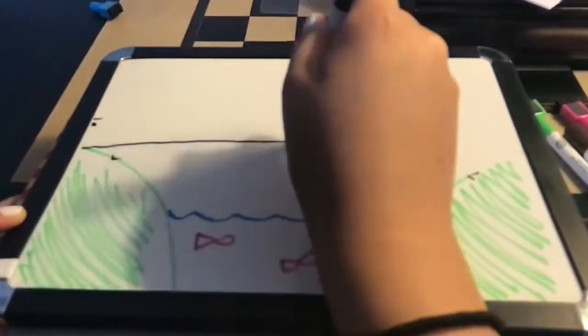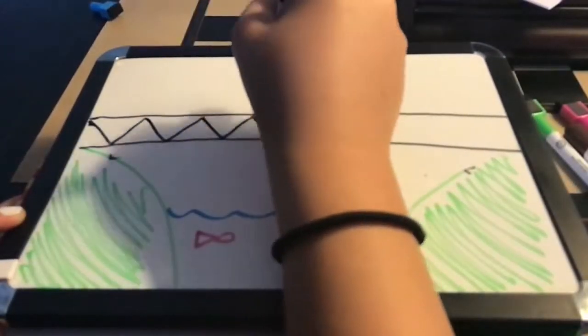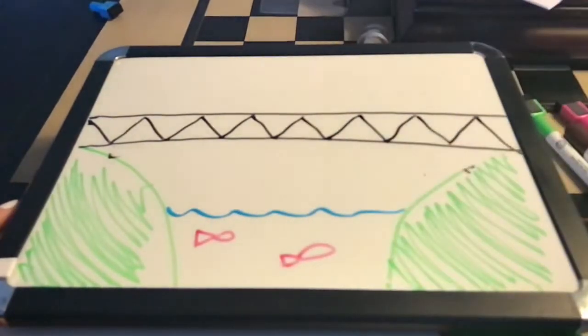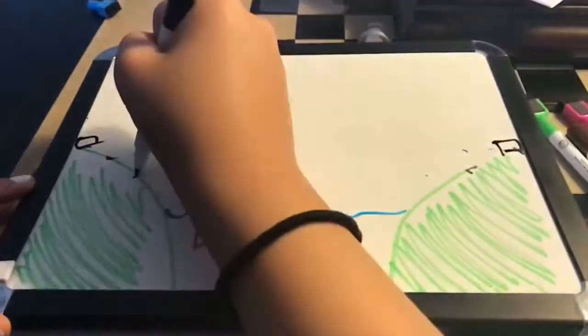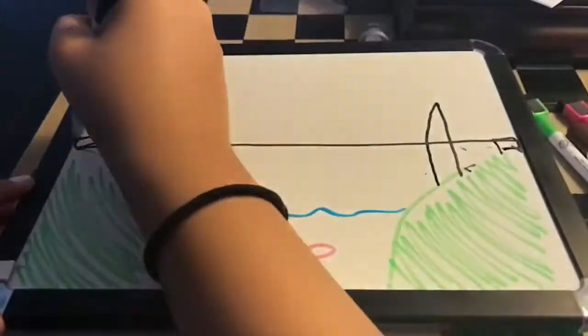Third, we have the truss bridge. The truss bridge is basically created by a supporting lattice network. And lastly, the bridge that we will focus on most in this video is the suspension bridge.